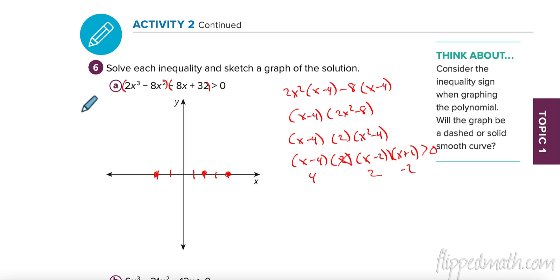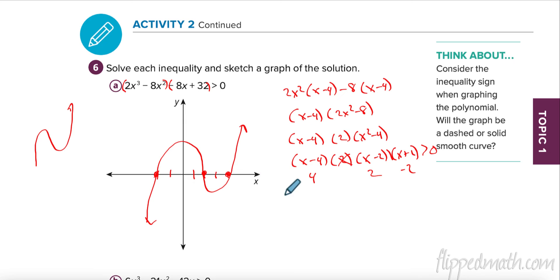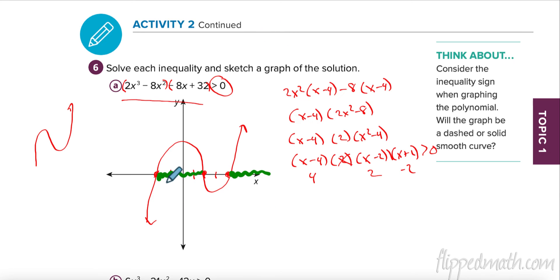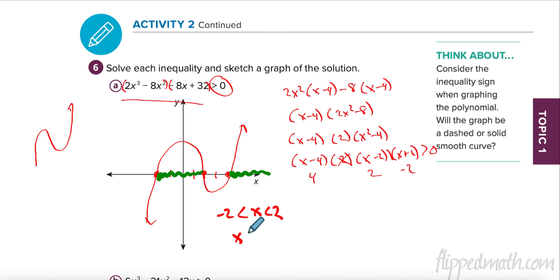The leading coefficient is positive, and since it's a third-degree polynomial, it increases as we go right. The expression is greater than 0 between x = −2 and x = 2, and also when x > 4. So our intervals are −2 < x < 2 and x > 4 — those are where the polynomial is greater than zero.